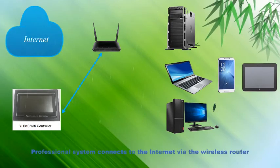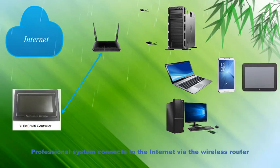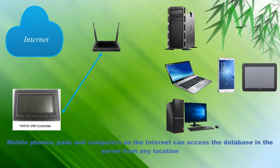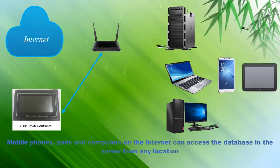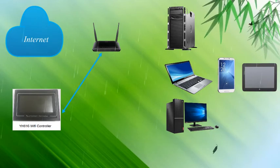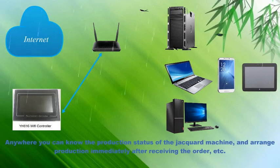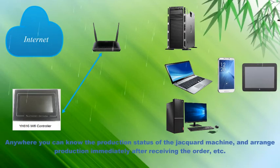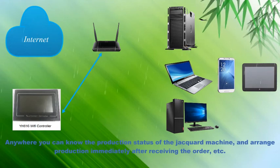The professional system connects to the internet via the wireless router. Mobile phones, pads, and computers on the internet can access the database in the server from any location. Anywhere, you can know the production status of the machine, and arrange production immediately after receiving the order.